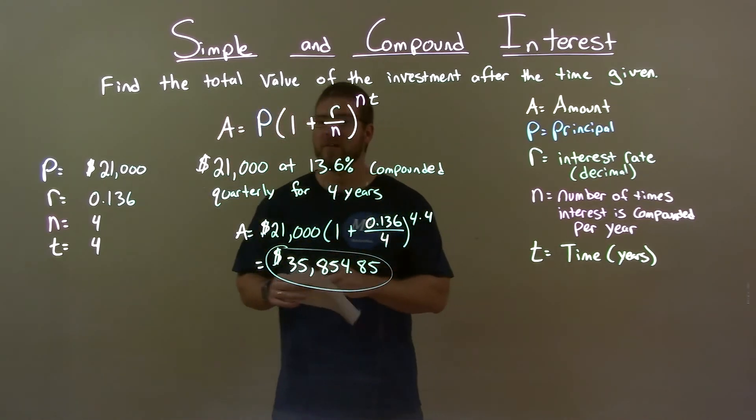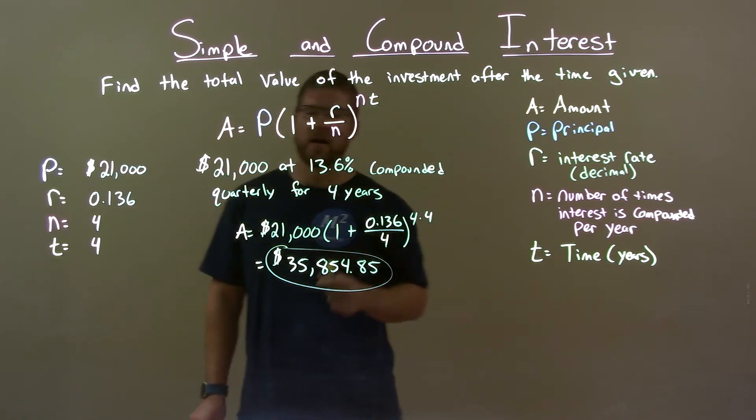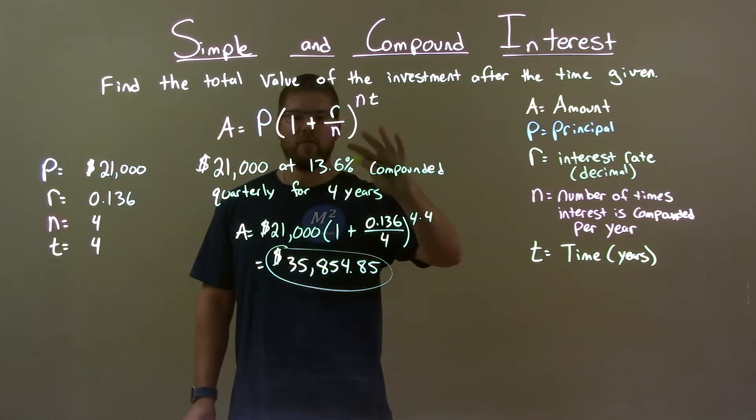Quick recap. We're given $21,000 at 13.6% compounded quarterly for four years. With that information...